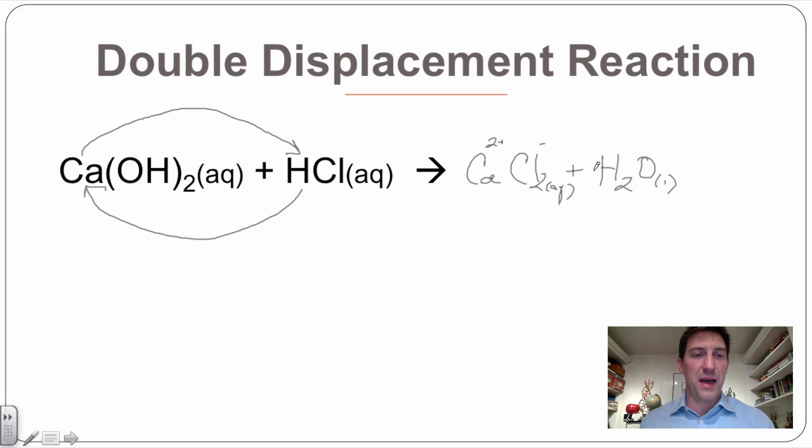And then when I go to balance this out, I start to count them up and I need a two here and a two here. And this thing is balanced out in my double displacement reaction.